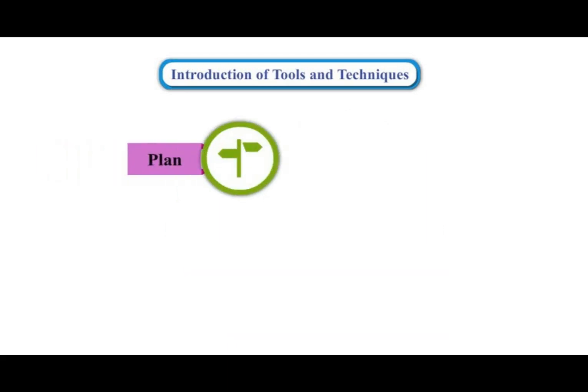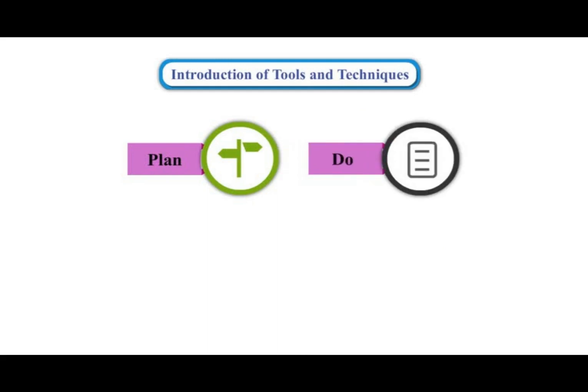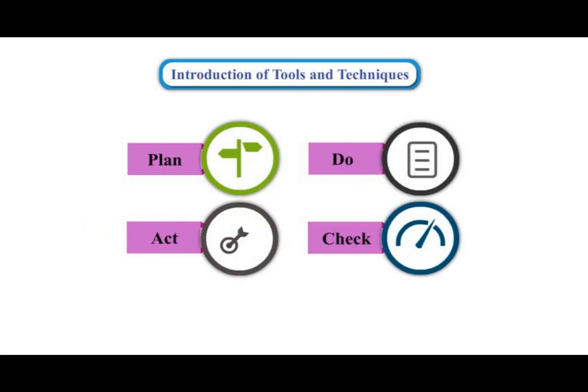Plan for changes to bring about improvement. Do changes on a small scale first to trial them. Act to get the greatest benefit from changes. Check to see if changes are working and to investigate selected processes. This e-lecture and video lecture will help you understand the concept of tools and techniques of PDCA.